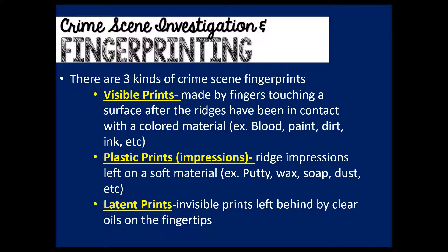For today's lesson, you need to know that there are three types of crime scene prints — don't get this confused with the three patterns, which are loops, whorls, and arches. The first type is visible prints. These are prints made by fingers that touch a surface where the ridges have been in contact with some sort of colored or visible material like blood, dirt, paint, ink, or makeup. Visible prints are prints that are seen by investigators when they are scanning the crime scene.